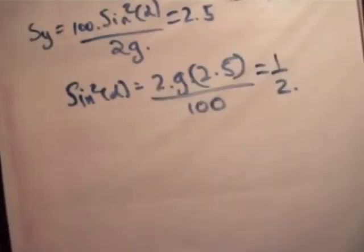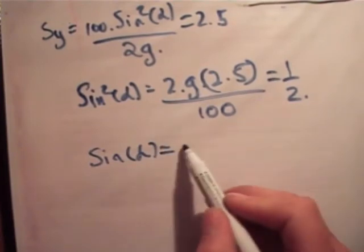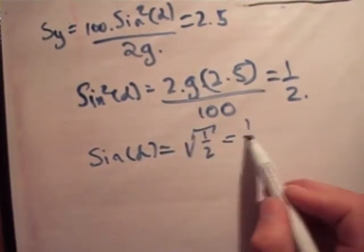So if sine squared of alpha is equal to half, sine alpha is equal to square root of a half, which is equal to a quarter.